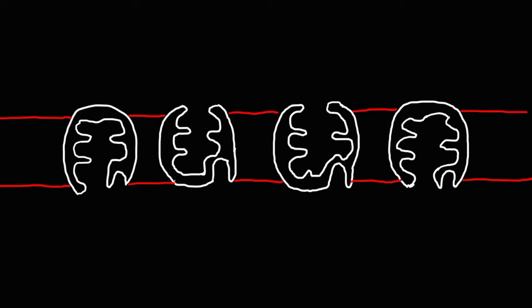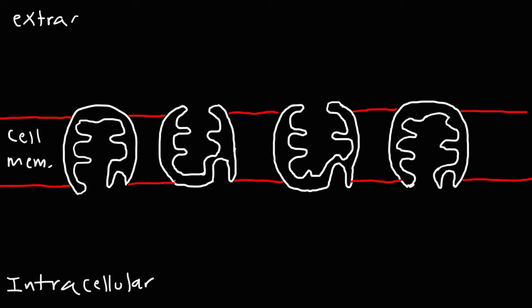In this video, we're going to talk about the sodium-potassium pump. So in red is the cell membrane. Below that is the intracellular fluid, which is basically inside of the cell. And outside of that, we have the extracellular fluid, or the outside part of the cell.